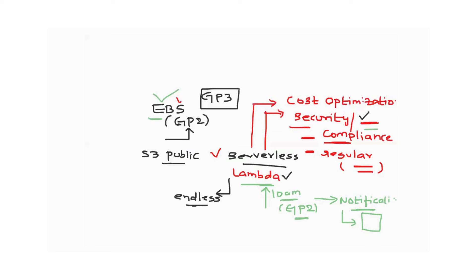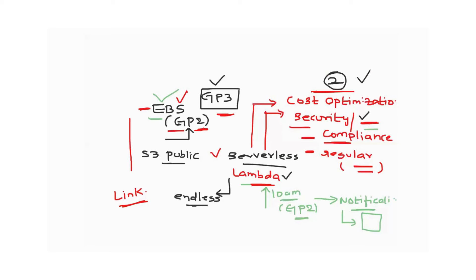I will show you both demos. The EBS GP2 to GP3 compliance demo is already available on my channel — I'll put the link in the description. Tomorrow's video will focus on cost optimization, which is very important. If you join as a cloud or DevOps engineer in any organization, cost optimization will be one of the most required things. So this is a brief introduction of Lambda functions and now I'll share my screen to show you how to use Lambda functions from the AWS UI.